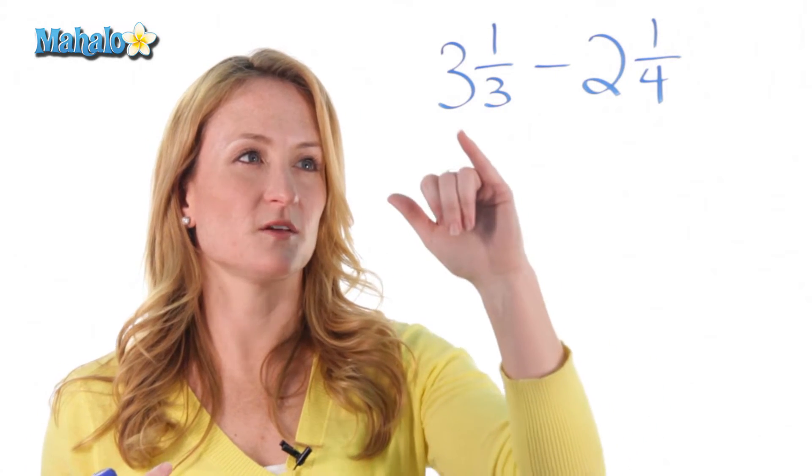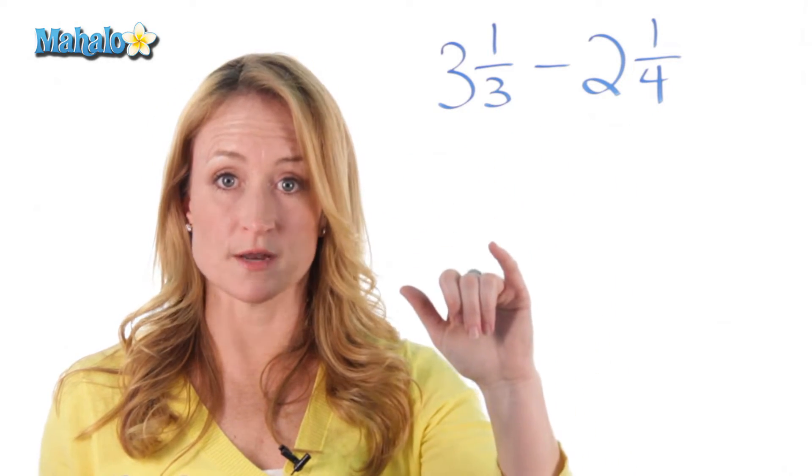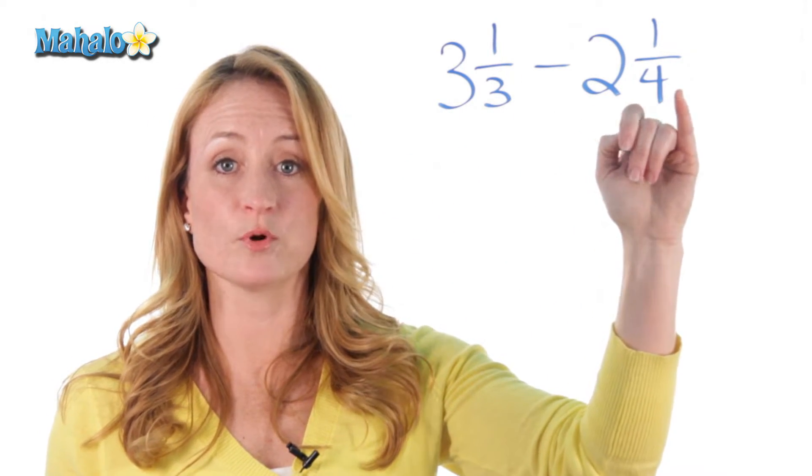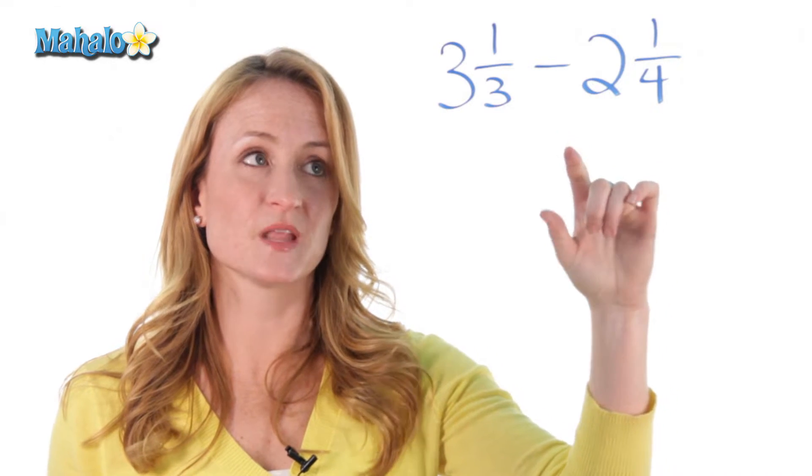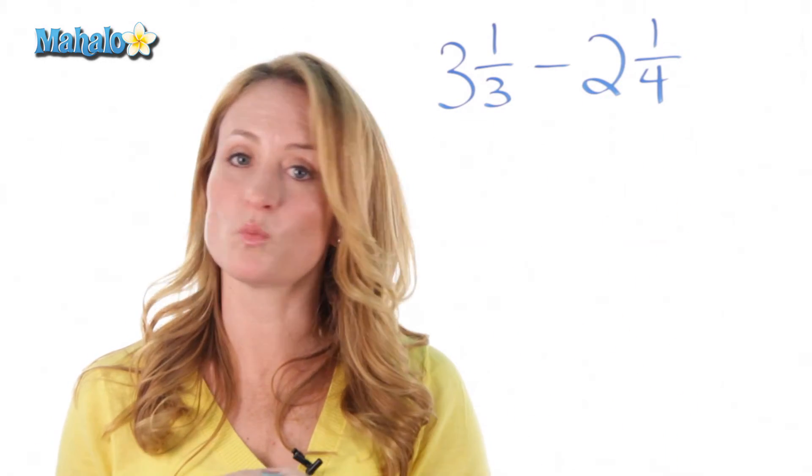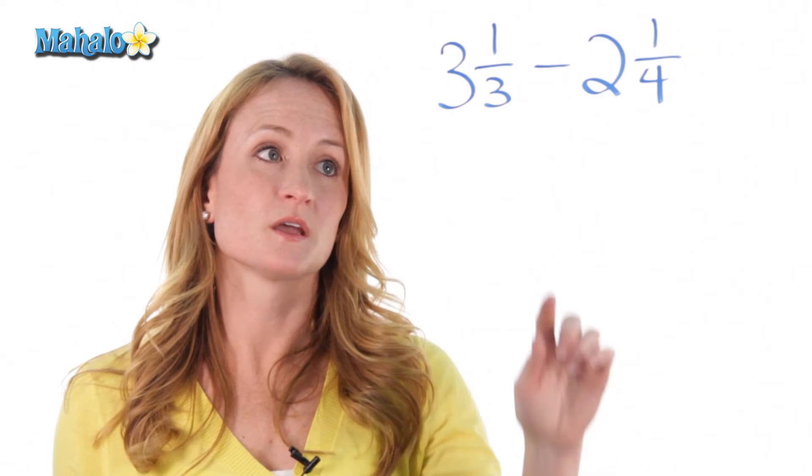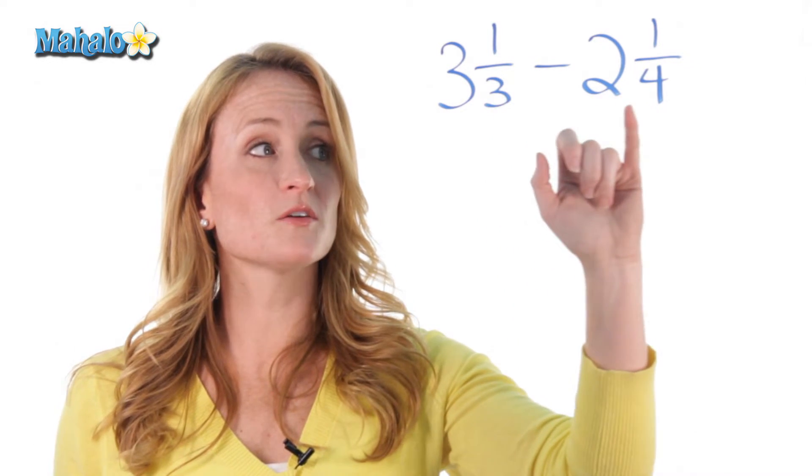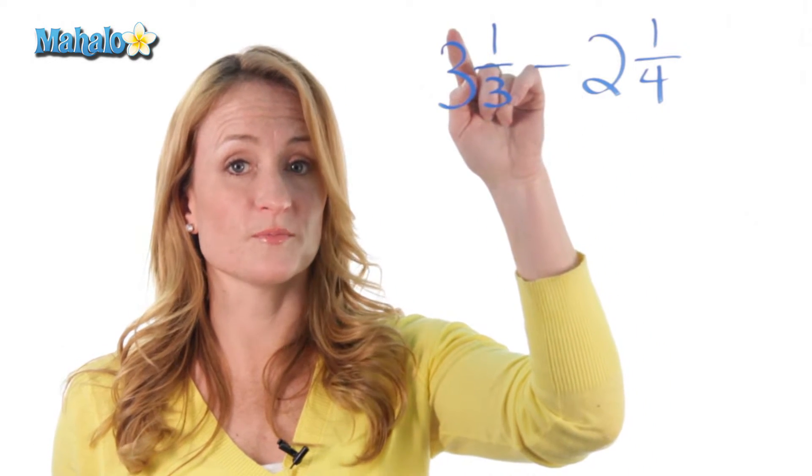For example, some people think that you can just do 3 minus 2 and get 1, and then do 1 third minus 1 fourth, and get whatever that fraction is. Now, in this problem something like that would work, but it won't work every single time, because if this fraction is smaller than this one, you'll have to borrow from that whole number.